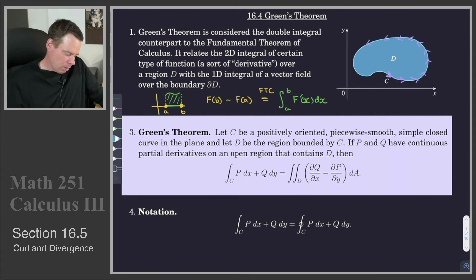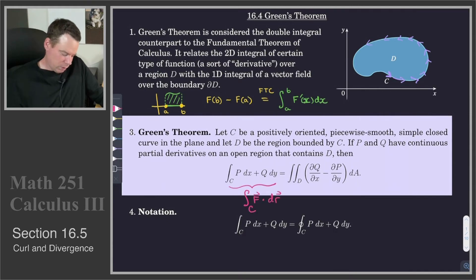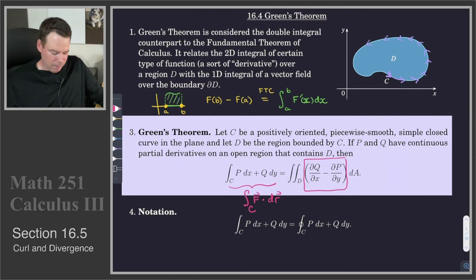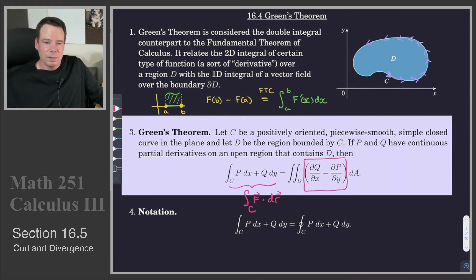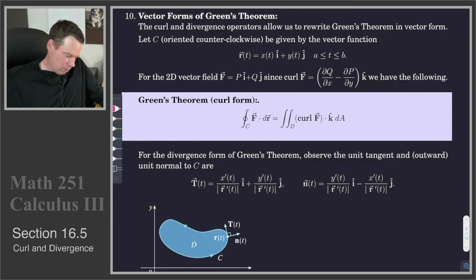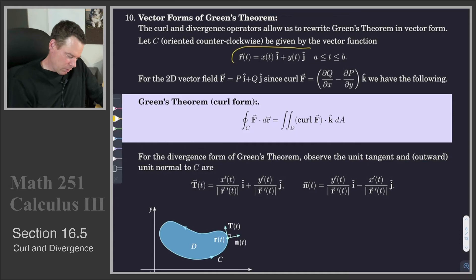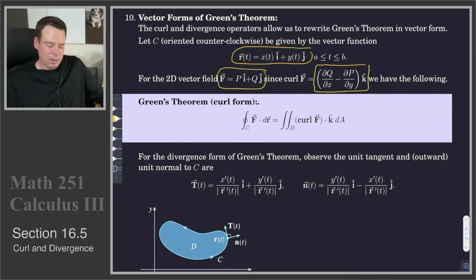Let's look back at Green's Theorem. It says that we've got this line integral, written as the integral of F dot dr over some curve C, and Green's Theorem relates that to the double integral over the region of dQ/dx minus dP/dy. If we look closely at that, we'll see that it's precisely the z-component of the curl of this vector field — that's what we're going to write down now. If we write down the curl of the vector field, it's just dQ/dx minus dP/dy in the k-hat direction.